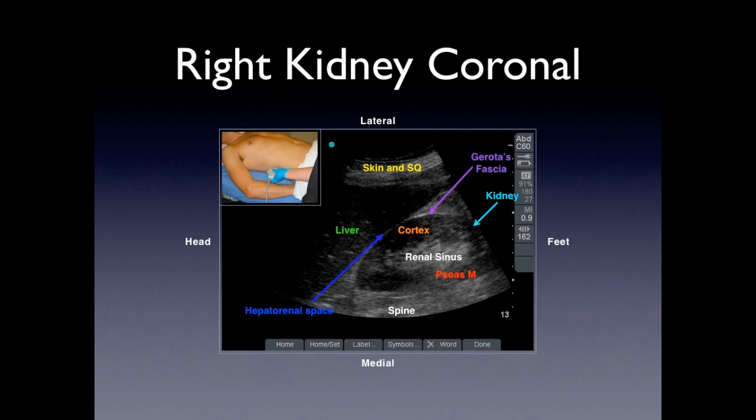Here we have a generalized view that includes all of the anatomy in that quadrant — the hepatorenal space, the kidney, the liver, and the spine. We'll talk about it in detail during the lab.